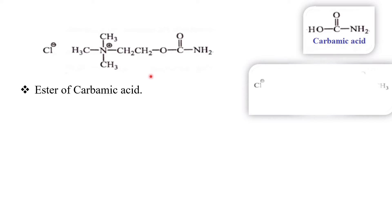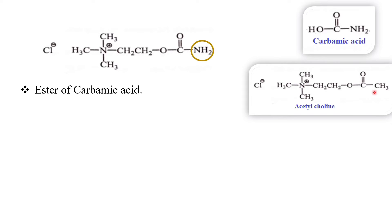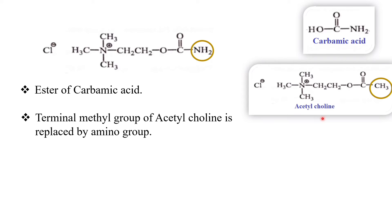Carbachol chloride has structural similarity with acetylcholine. In carbachol chloride it has an NH2 group, whereas in acetylcholine that NH2 is replaced by a methyl group — that is the structure of acetylcholine. So what differs in acetylcholine is that the terminal methyl is replaced by an amino group in carbachol chloride. Carbachol chloride has both muscarinic and nicotinic properties.